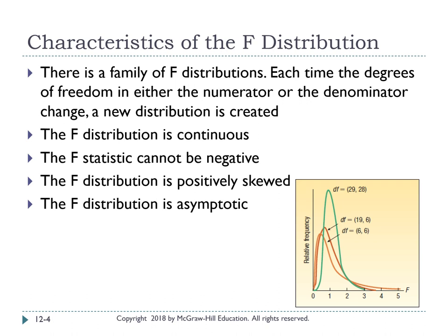Let's look at the characteristics of the F distribution. First, there is a family of F distributions, meaning your F distribution will have different shapes. Each time the degrees of freedom in either the numerator or denominator change, a new distribution will be created. Second, the F distribution is continuous, meaning the number will keep going until infinity.